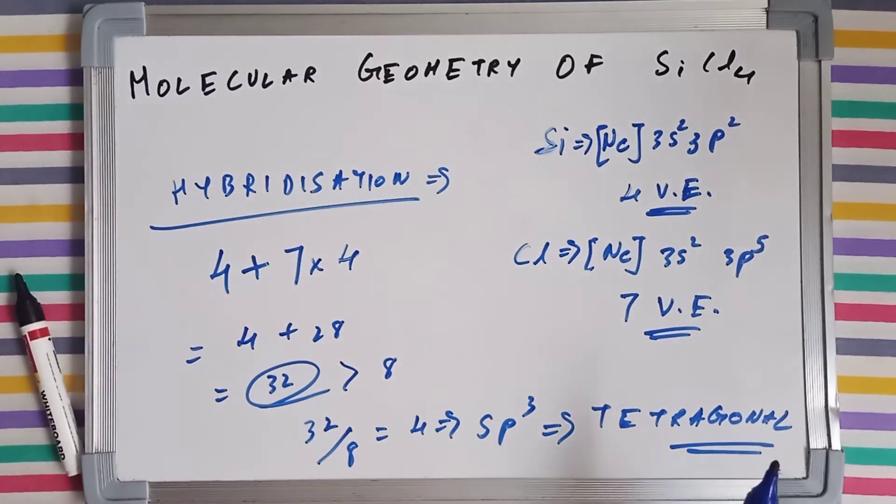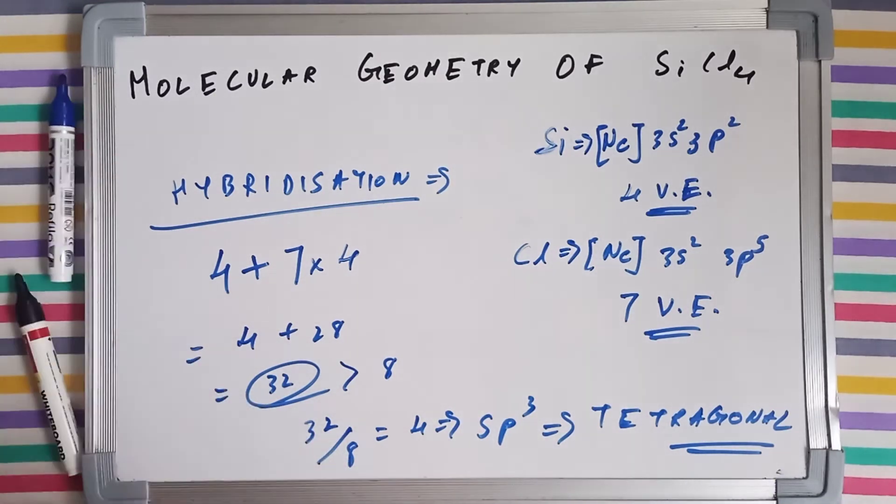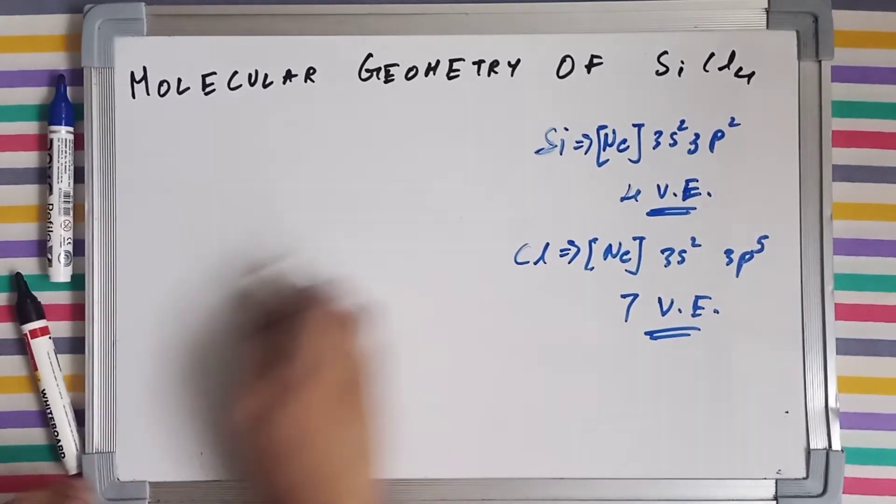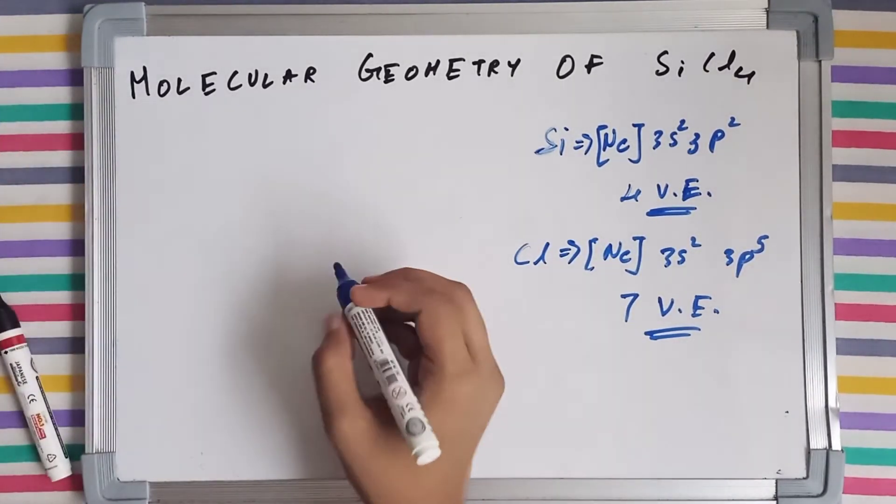So our hybridization came out as tetrahedral, which means that the molecular geometry of SiCl4 is going to be like this.